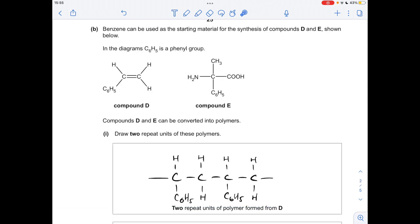Moving on to part B, so compound D is going to polymerise by that double bond, open it up, it's the pi pair of electrons, opens up and basically you can join the monomers together. So two repeat units for polymer D would look like that.